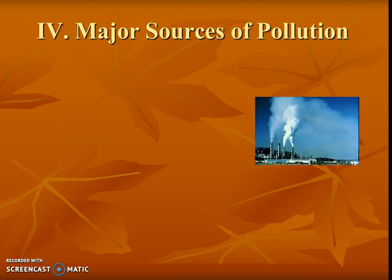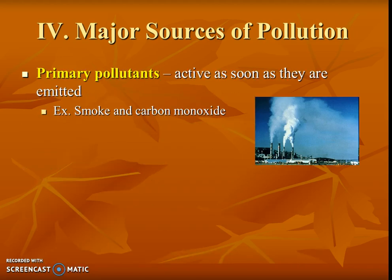When we think about major sources of pollution, we can think about two types of pollutant names. There are primary pollutants — they are active immediately after they're emitted. Smoke will create particulates, and carbon monoxide — that's the thing you have a carbon monoxide detector in your house for. Those are active immediately, and that's why that's what we test in the home.